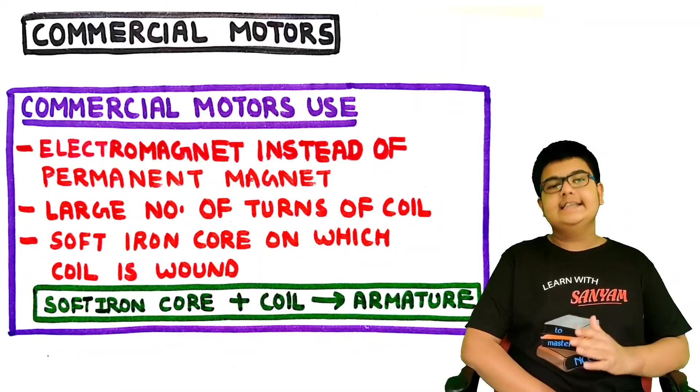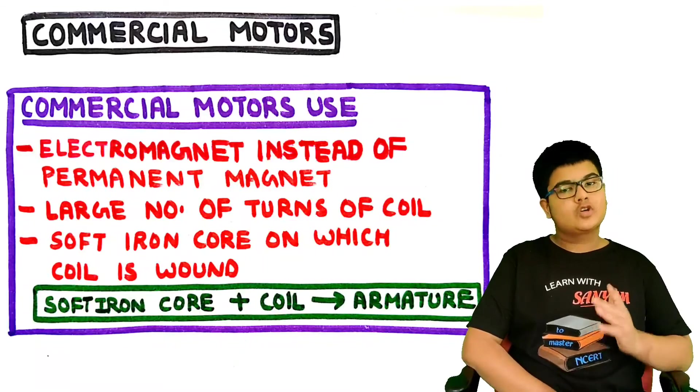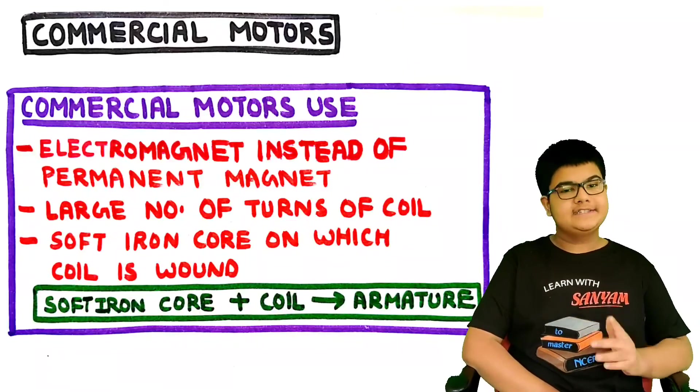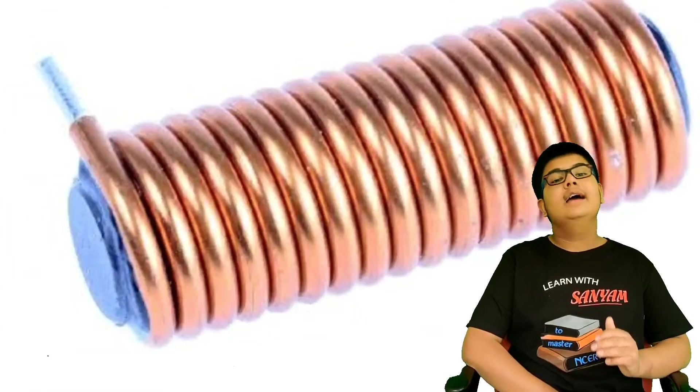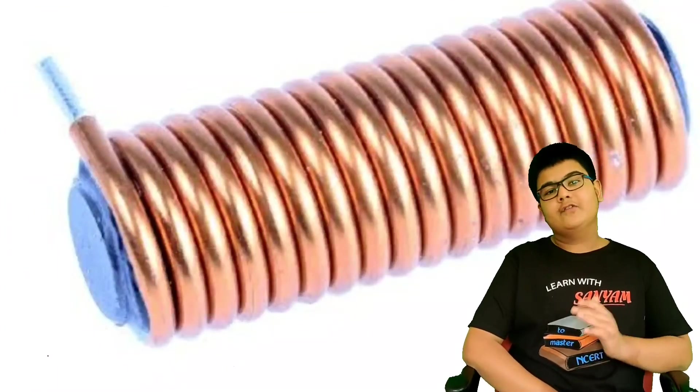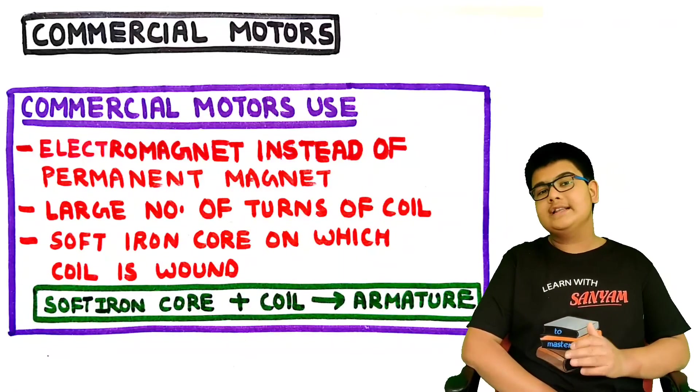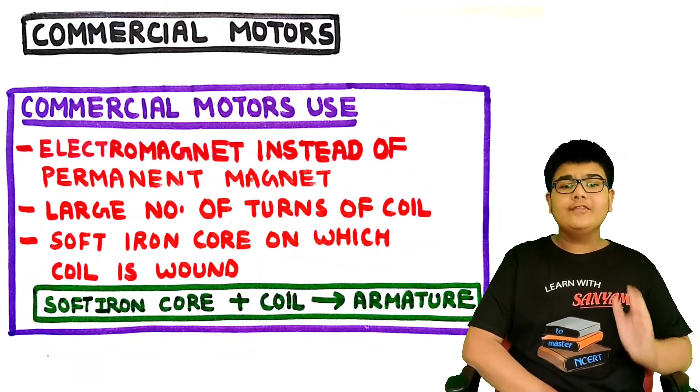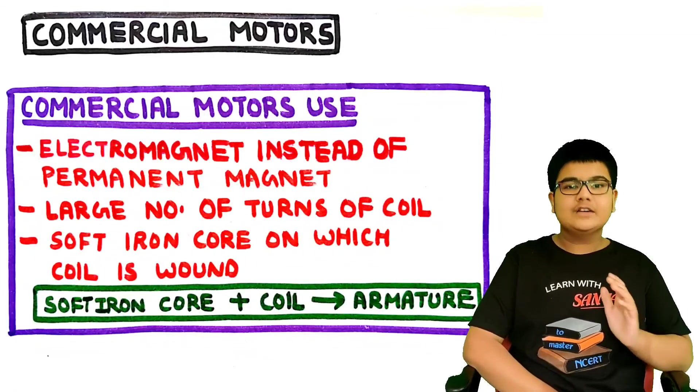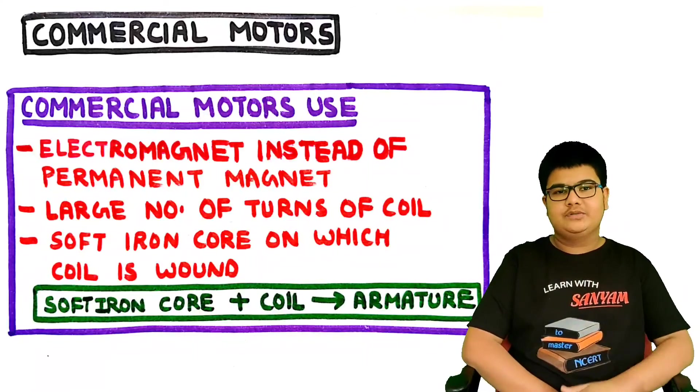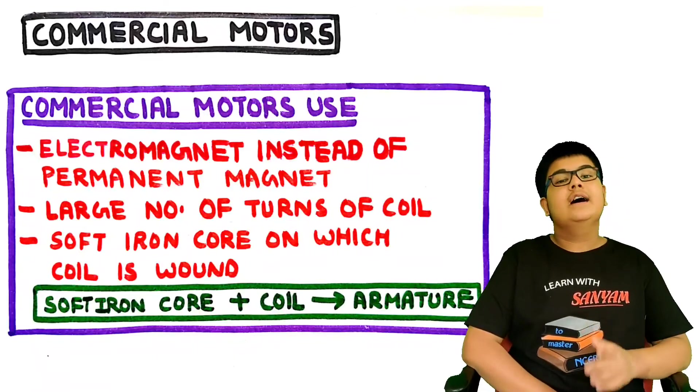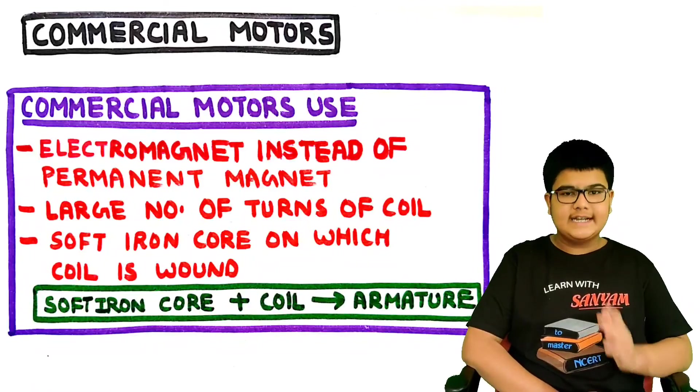Let's see commercial motors. Commercial motors use an electromagnet instead of a permanent magnet, a large number of turns of coil and a soft iron core on which the coil is wound. The soft iron core plus the coil gives us armature. In commercial motors, an armature is used instead of a simple coil.